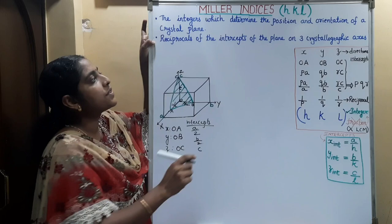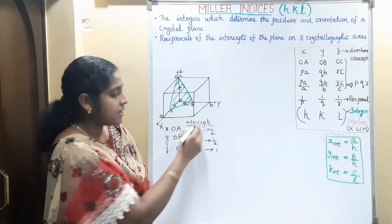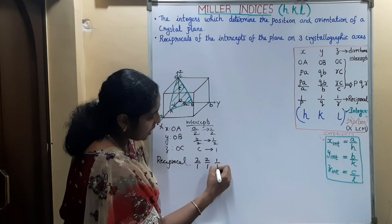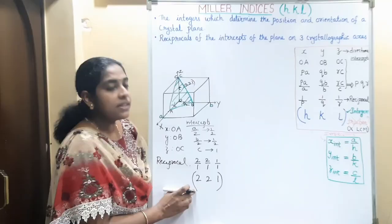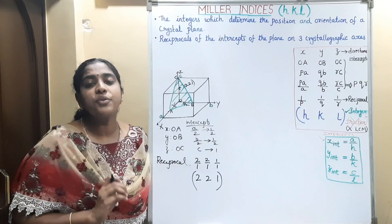To find the Miller indices, take the reciprocal of the intercepts of this plane on the three crystallographic axes. The intercept along the x-axis is 1/2, along the y-axis is 1/2, and along the z-axis is 1. Taking the reciprocal gives 2/1, 2/1, 1/1 — that is 2, 2, 1. So we can represent this plane as (2,2,1). These three integers in the curved bracket are known as the Miller indices of this plane.